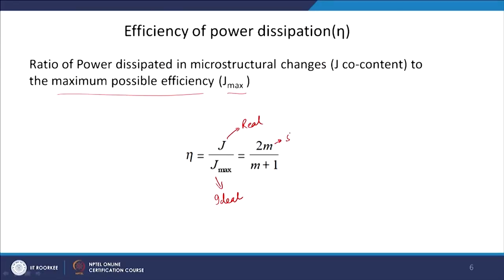High efficiency regions are where good microstructural changes take place — for example, dynamic recrystallization, dynamic recovery, and so on. All these desirable microstructural changes take place where you have higher efficiency, and the efficiency is simply dependent on the strain rate sensitivity. So with only one material parameter — strain rate sensitivity — if it is high, you will have higher efficiency. This is how you can use stress as a function of strain rate at different temperatures to construct a contour map.